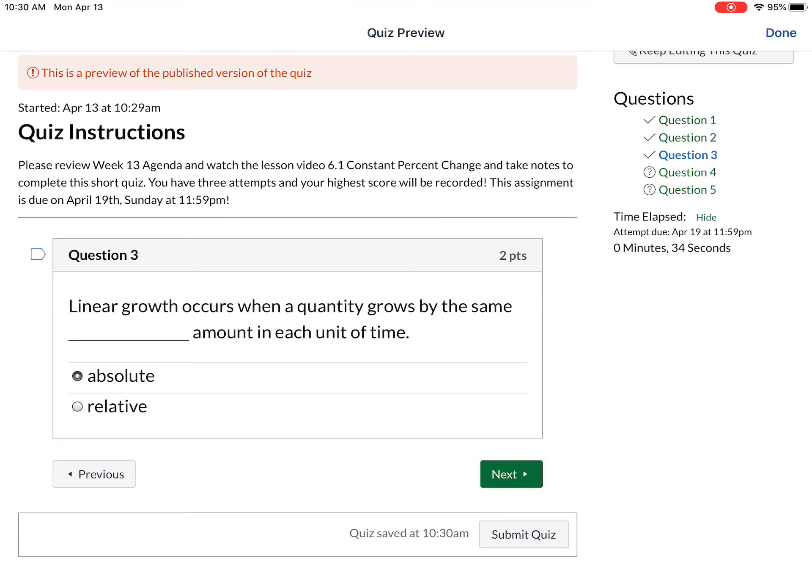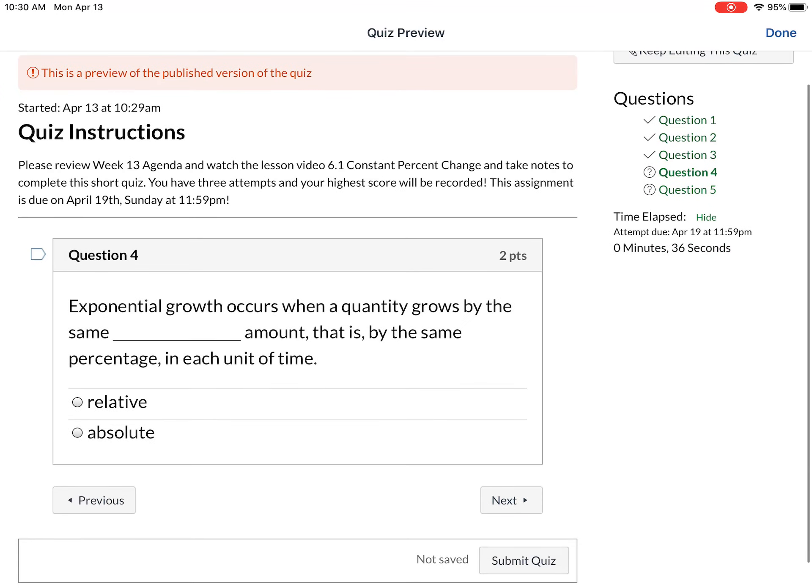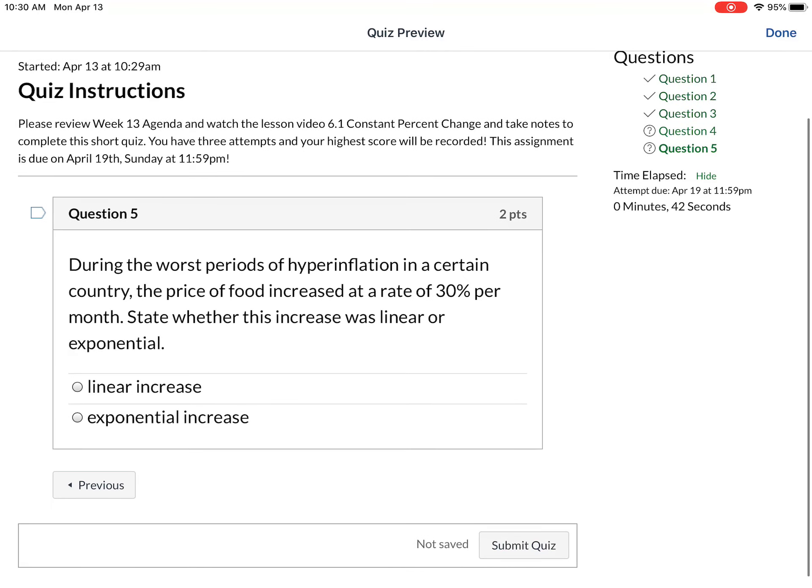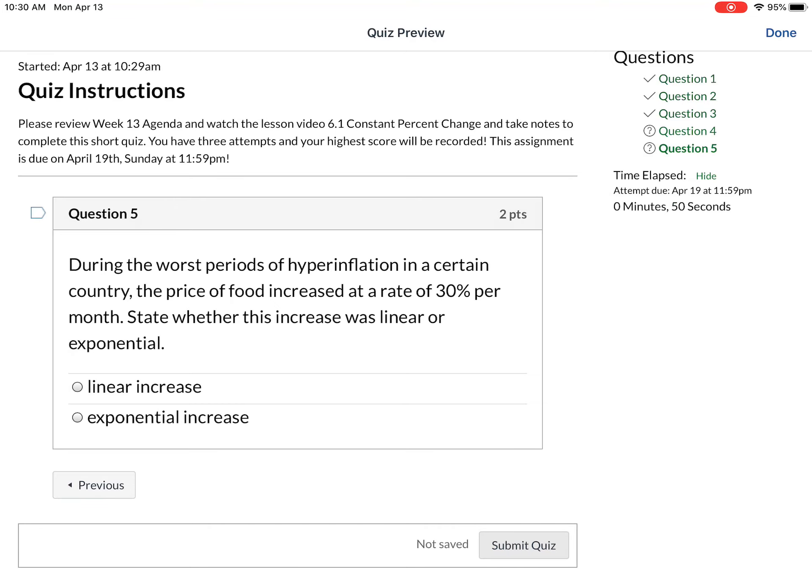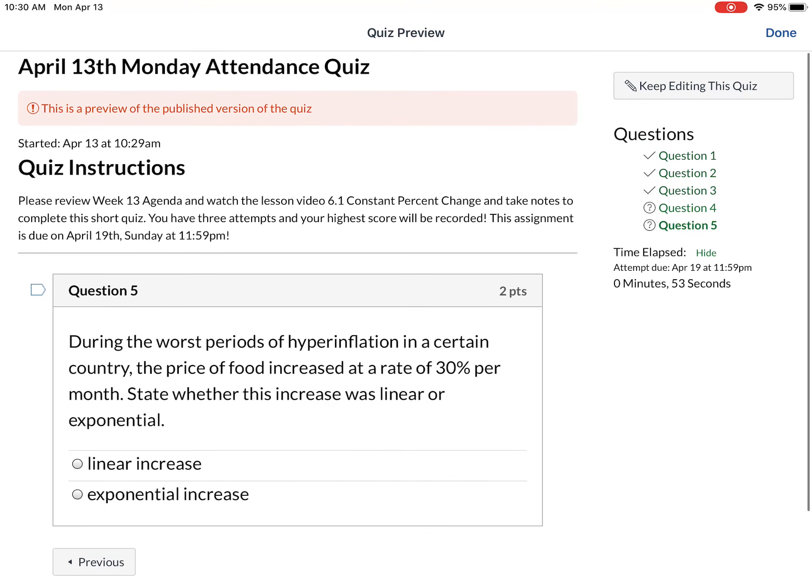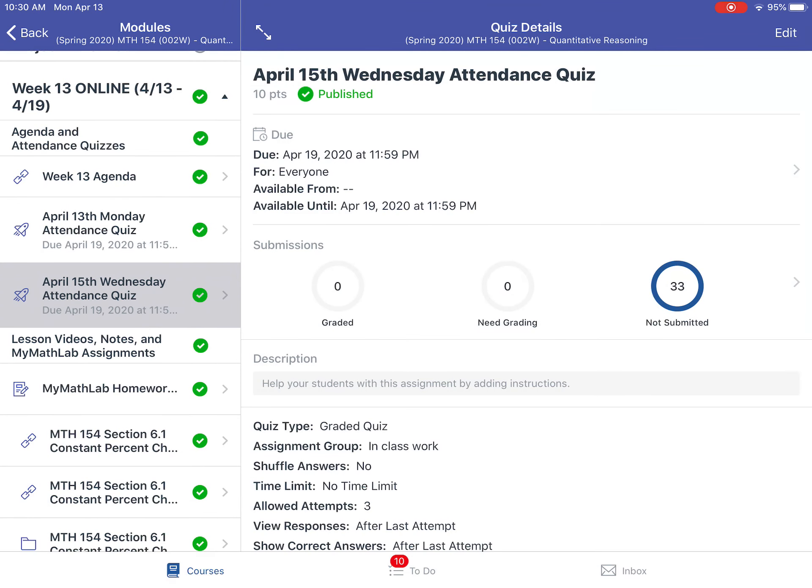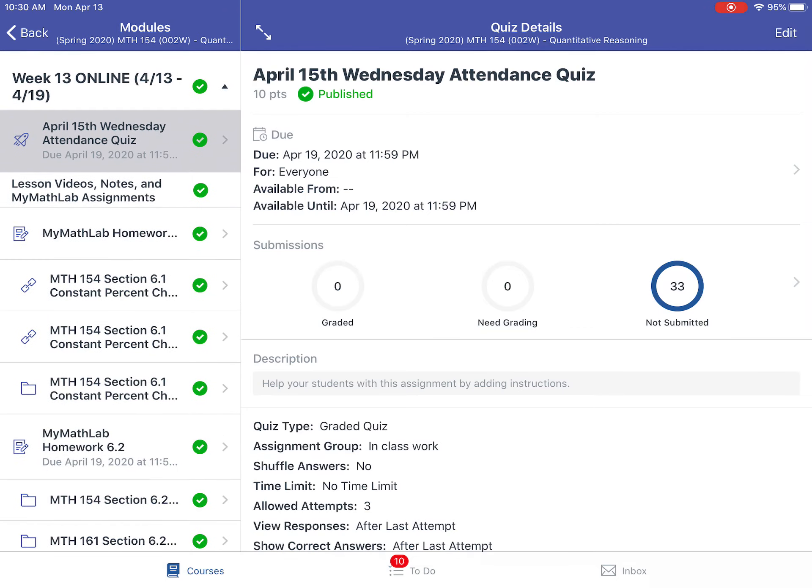The Excel homework is called Marriage. We did this. Remember, what's the annual compounding formula? Question 3 is asking: linear growth occurs when a quantity grows by the same what kind of amount? Absolute amount. Exponential growth occurs when a quantity grows by what amount? Once you answer all the questions and submit it, you do have three attempts on this attendance quiz. I do have one already for Wednesday, but I'll go over the lesson before I ask you to take this.